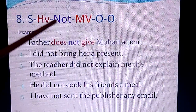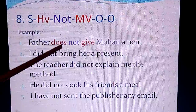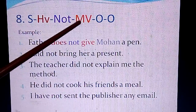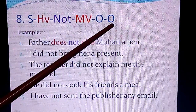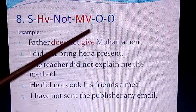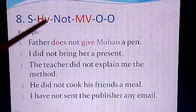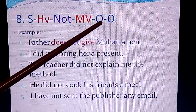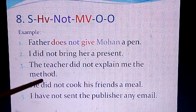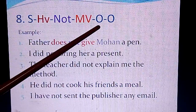The eighth structure is negatives: subject, helping verb, 'not,' main verb, object, and object. For example, 'Father does not give Mohan a pen.' Since we have already done affirmative sentences, I hope negatives are easy to follow. Another example: 'I did not bring her a present.'